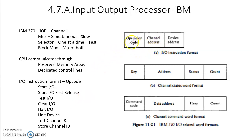To perform these I/O instructions, the CPU has to mention the operation code. The second field is the channel address, meaning the CPU can be connected with more than one channel. One channel is used to connect with multiple I/O devices. Similarly, one computer can use more than one channel, and each channel can have multiple I/O devices. So channel address and device address are both required to perform any I/O instruction with the help of the input-output processor.